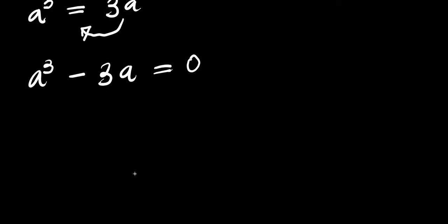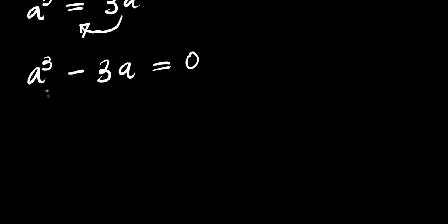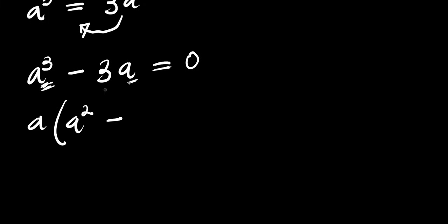The next step is to factor out a, because we have a power of 3 and 3a — there is an a in each term. We divide a³ by a to get a squared, and we divide 3a by a to get 3, giving us a times (a squared minus 3) equals 0.